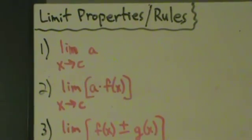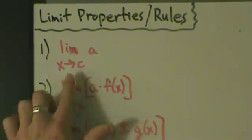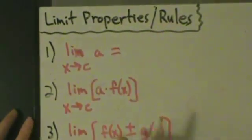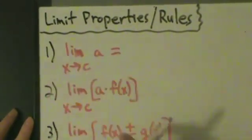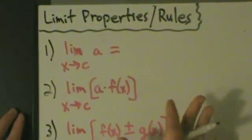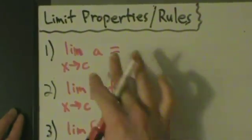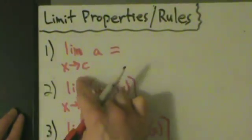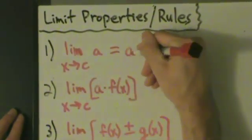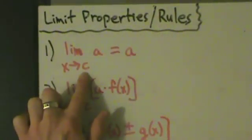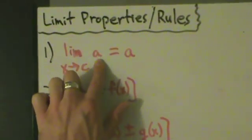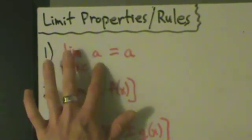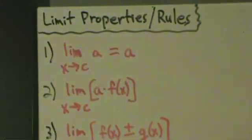Let's get started with the properties. Property 1: the limit as x approaches c of a equals a. Here, c and a represent any real numbers — 0, 1, anything negative, etc. They could be the same or different, it doesn't matter. The limit as x approaches c of some constant is just that constant. Whatever's happening with c doesn't matter. So if you take a limit as x approaches any number of a constant, you just get that constant back.